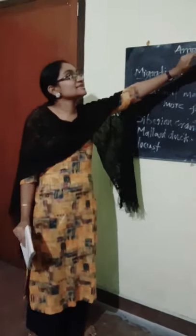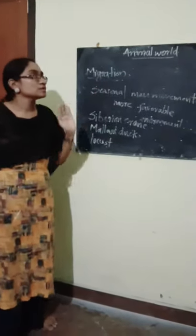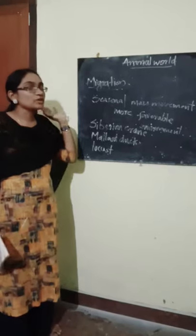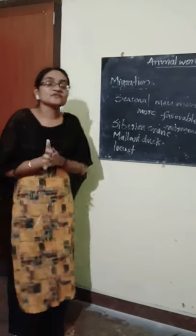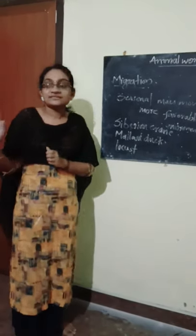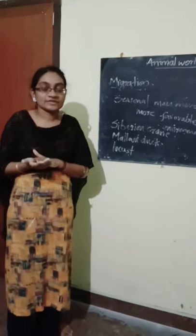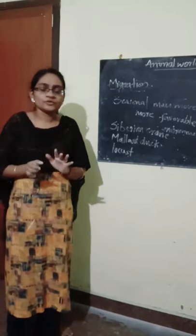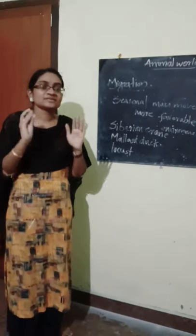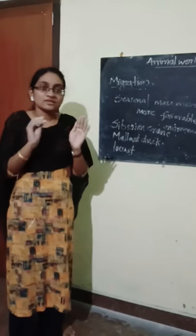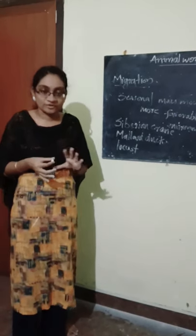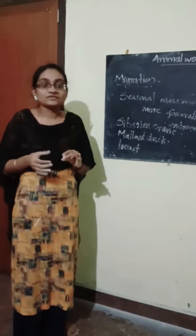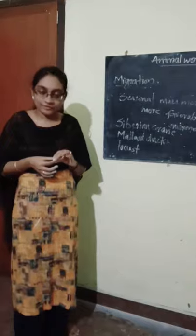This is about migration and here we are concluding our chapter. Our chapter name was Animal World and we covered all the topics in this chapter. Please read your textbook three or four times and find the answers in the last part of your textbook. We will meet in the next class. Thank you.